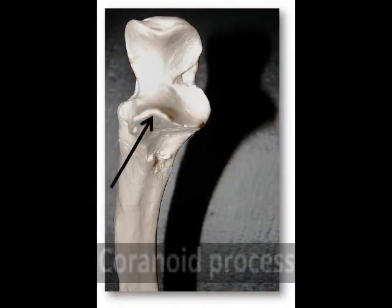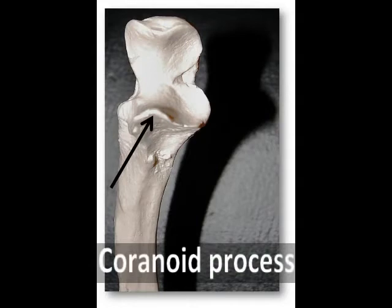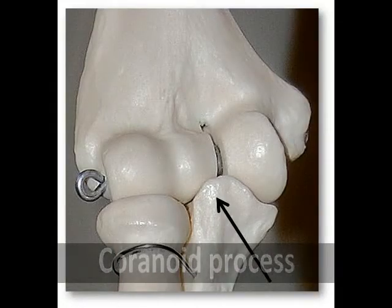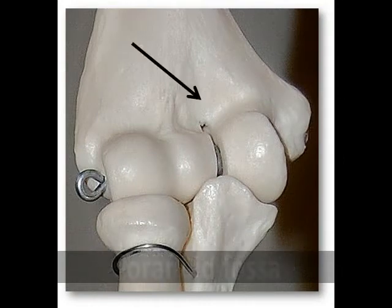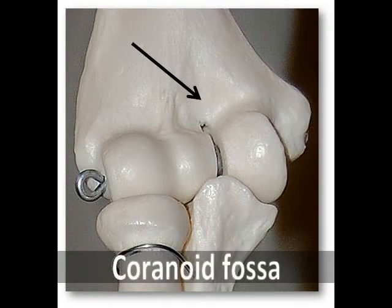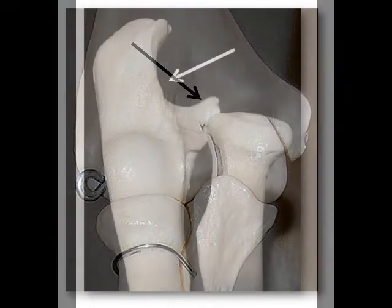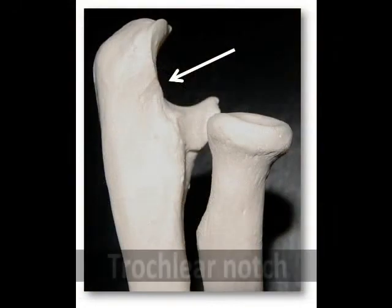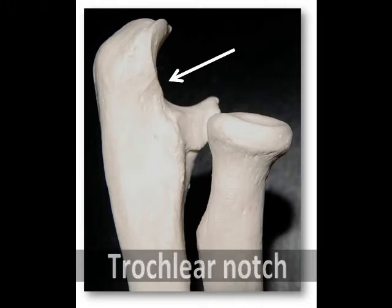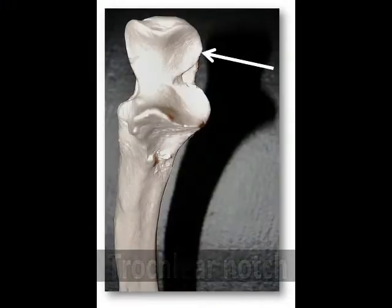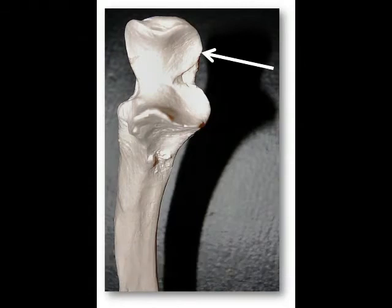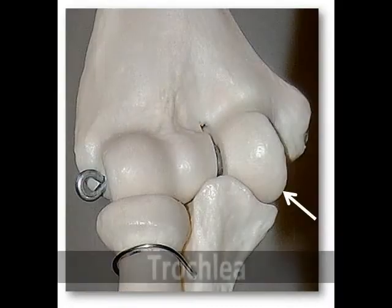On the anterior side of the ulna, we'll find the coronoid process. This projection hooks into the coronoid fossa on the anterior distal humerus. The coronoid fossa is a much shallower depression compared to the olecranon fossa. The trochlear notch is the larger curved area shaped like the letter U, which identifies this bone as the ulna. It's found between the olecranon and the coronoid process and forms part of the elbow joint. It's named after the trochlea of the humerus, the tooth-like process with which it articulates.